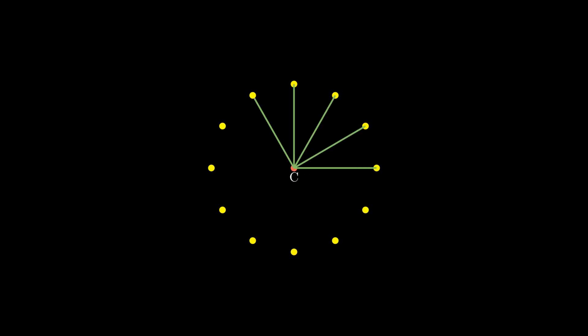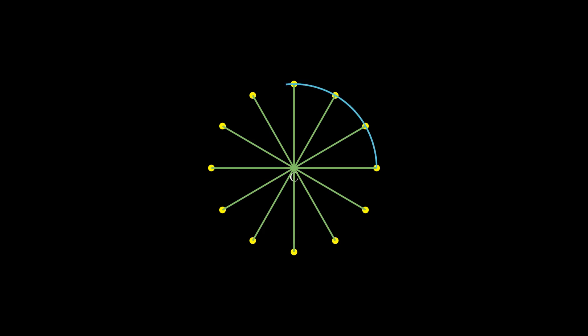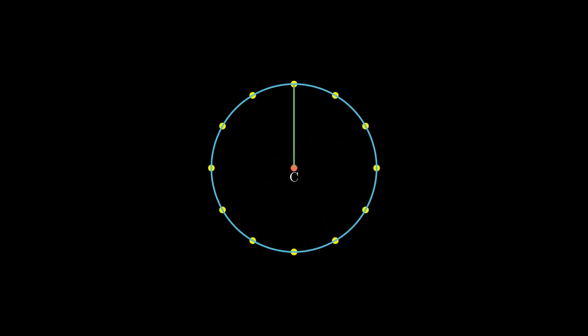The line segment formed by joining this fixed point to any point on the circumference of the circle is called the radius. Whereas the line segment formed by joining any two points on the circumference of the circle is called a chord. The longest chord in the circle passes through the center and is known as the diameter of the circle.